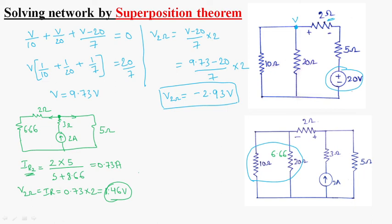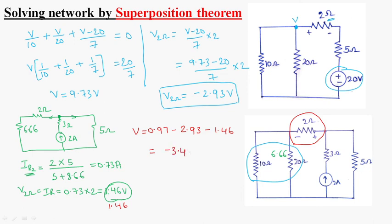Now, the algebraic sum of all three voltages gives the total voltage across the 2 ohm resistor: 0.97 − 2.93 − 1.46 = −3.42 volts. The negative sign indicates that the actual polarity of the voltage across the 2 ohm resistor is opposite to the assumed reference. This is the voltage across the 2 ohm resistor found by using the superposition theorem. Thank you.